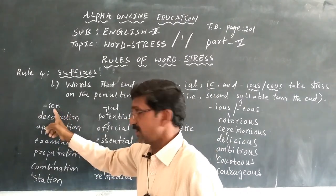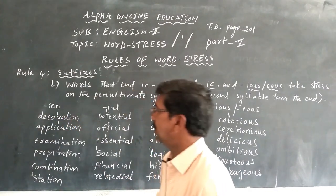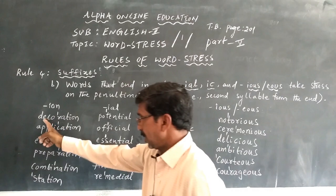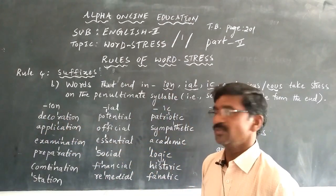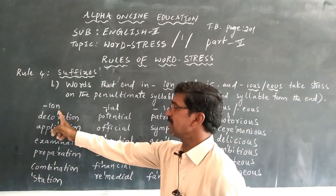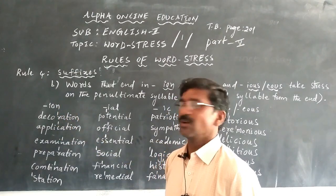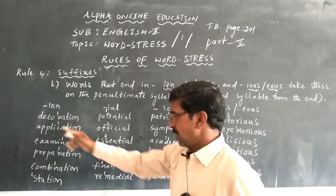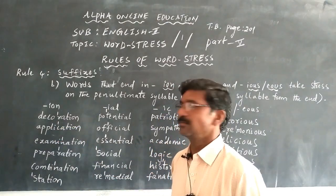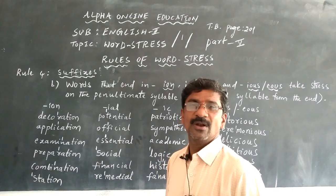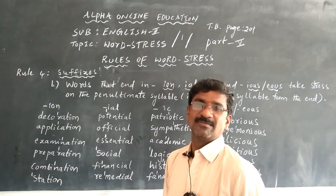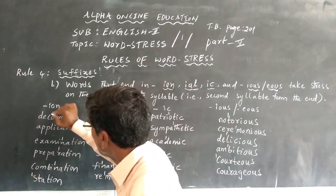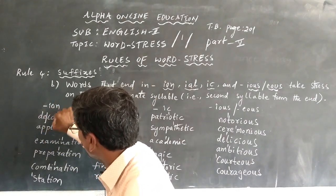Take the word 'decoration' — the suffix -ion comes at the end of the word. In this word we place the stress mark. We pronounce it like this: decoration, decoration.